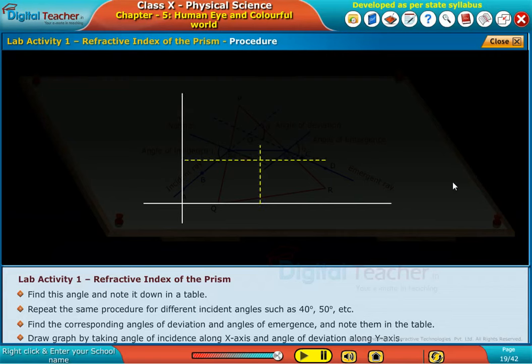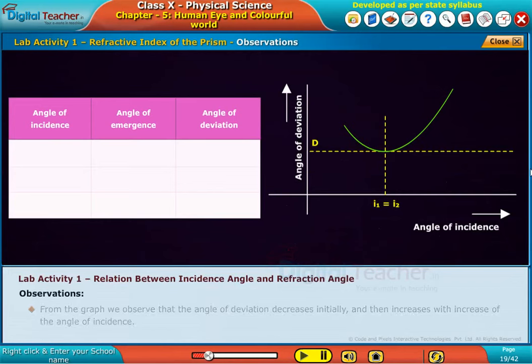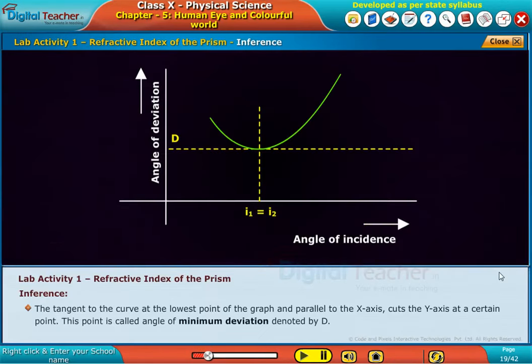Draw graph by taking angle of incidence along X axis and angle of deviation along Y axis. From the graph, we observe that the angle of deviation decreases initially and then increases with increase of the angle of incidence. The tangent to the curve at the lowest point of the graph and parallel to the X axis cuts the Y axis at a certain point. This point is called angle of minimum deviation denoted by D.